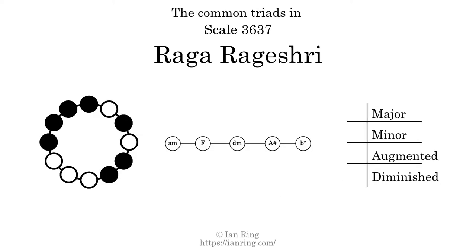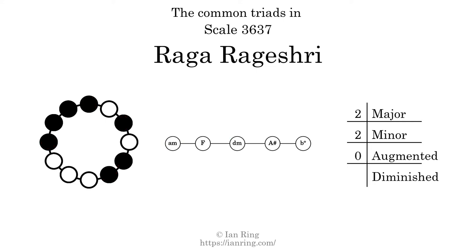Here are the common triads present in this scale. The diagram in the center is a graph of parsimonious voice leading between triads. There are 2 major triads, 2 minor triads, no augmented triads, and 1 diminished triad. Here is a Hamiltonian path of parsimonious voice leading that uses all the triads.